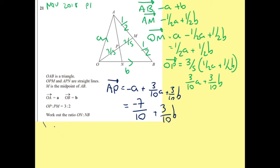Now because I've got AP, I now need to consider AN. Now AN is going to be a factor of AP. So I'm just going to call it factor K and I'm just going to times it all. So I've got minus 7K over 10 A plus 3K over 10 B.